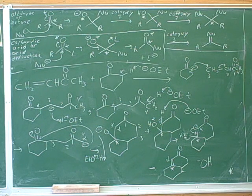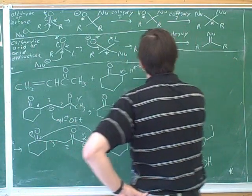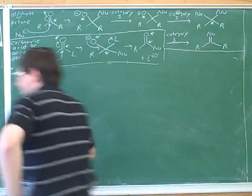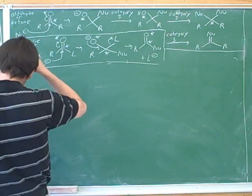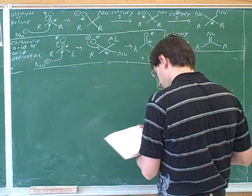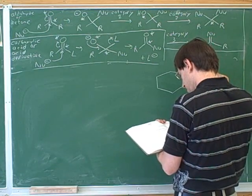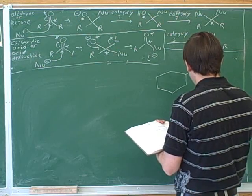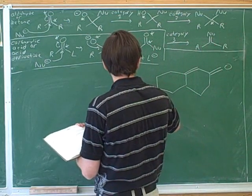Should we do a synthesis problem with Robinson annulation or should we move on to something else? Maybe we should just do one quick synthesis problem. We won't do the whole mechanism, so it won't take this too long. We can try out that trick and see how well it works. This is pretty likely to be on the test, I think.